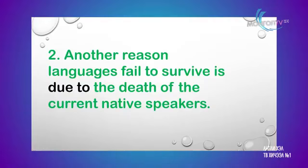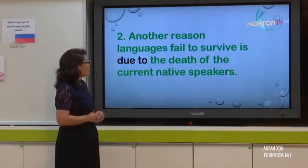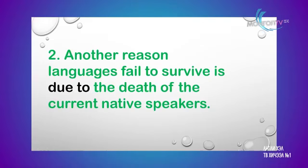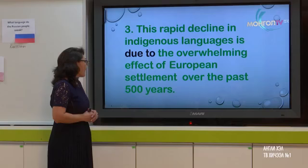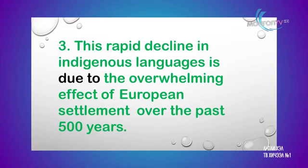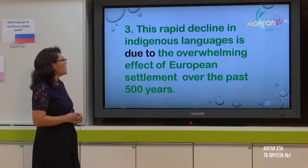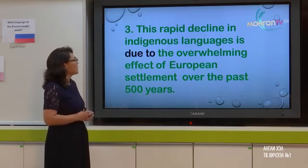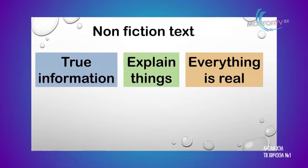The second sentence is: 'Another reason languages fail to survive is due to the death of current native speakers.' Here 'languages fail to survive' is the noun phrase being modified by 'due to', so 'due to' is correct. The third sentence is: 'This rapid decline in indigenous languages is due to the overwhelming effect of European settlement over the past 500 years.' 'Due to' modifies the noun phrase 'this rapid decline', just as we learned.